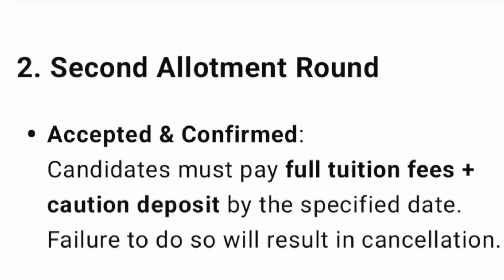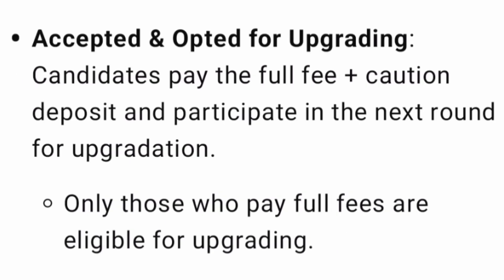After the second round of allotment, the first category is accepted and confirmed — the candidate must pay the full fees (tuition plus caution deposit) by 24th June. Failure to do so will result in cancellation of the seat. In the second round, there are also students who are accepted and opted for upgrading, but the condition is that you must pay the full fees plus caution deposit to participate in the next round. If you paid only the partial fees of 1 lakh rupees, you are not eligible for upgrading in the second round — only those who pay the full fees are eligible.